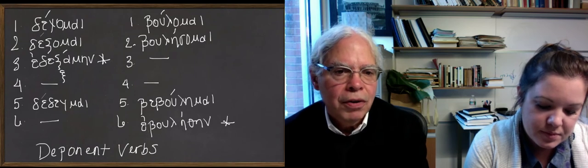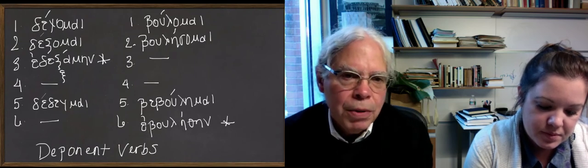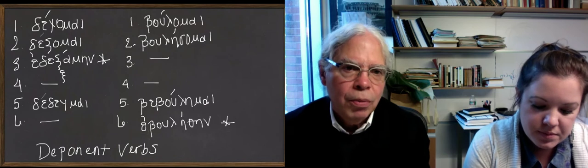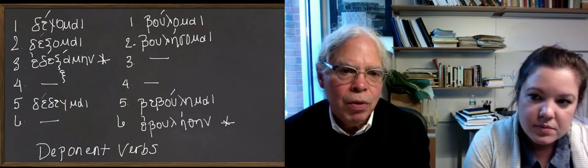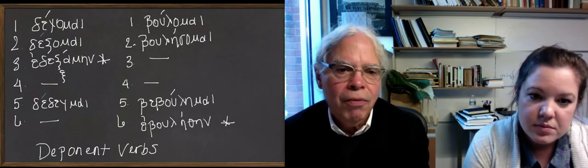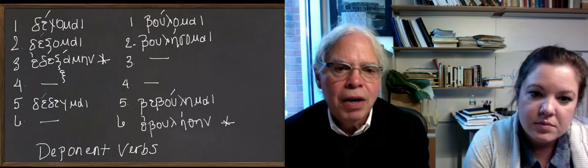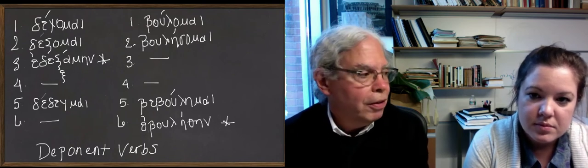That's the tricky part. It's not that the verb βούλομαι means to want. So βούλομαι means I want, and βουλήσομαι means I will want, and βεβούλημαι means I have wanted, and ἐβουλήθην means I wanted in the aorist. It doesn't mean I was wanted.